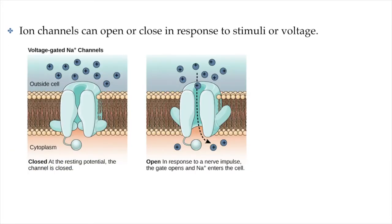Ion channels open and close in response to stimuli or voltage changes. There are voltage-gated channels and stimulus-gated channels that open and close in response to changes in membrane potential or other stimuli. Most potassium and sodium channels are voltage-gated — when different membrane potentials are reached, those channels open or close. This is how the action potential is achieved, maintained, and moves along the entire axon, with each change in membrane potential triggering ion channels to open or close so the action potential always remains about the same size.